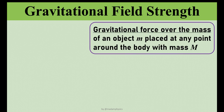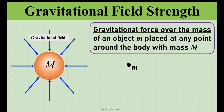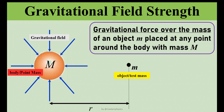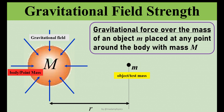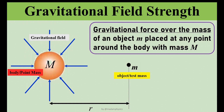Gravitational field strength, also known as gravitational acceleration, is defined as gravitational force over the mass of an object m placed at any point around a body with mass M. The small m represents the object, also called the test mass, located at a certain distance R from the body labelled as big M. This body, sometimes called point mass, is the one that produces the gravitational field — for example, the Earth.